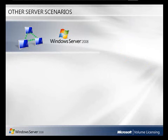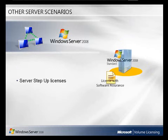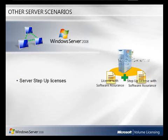Step-up licenses are an effective solution for moving from Windows Server Standard to Windows Server Enterprise. Any Windows Server Standard Edition license with software assurance can be upgraded to Enterprise Edition with a step-up license. If you have software assurance for Windows Server CALs or Windows Server 2008 CALs, no new CALs are required.